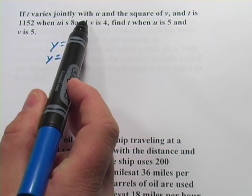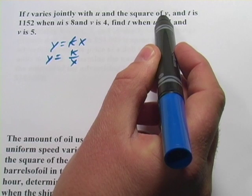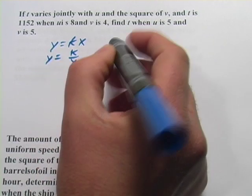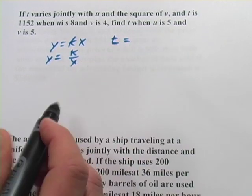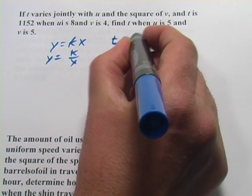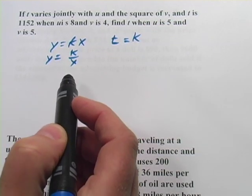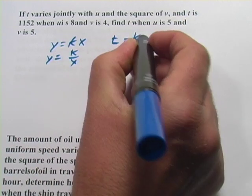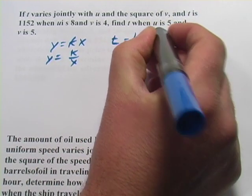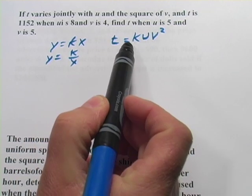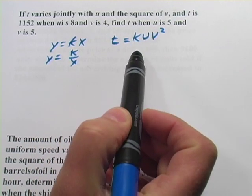It says if t varies jointly with u and the square of v. So to write that out, t is the thing that's varying, so we put it over here on the left. We still have our constant, just like we would always with a variation problem, and it varies jointly with u and the square of v. So it's just t equals k times u times v squared.